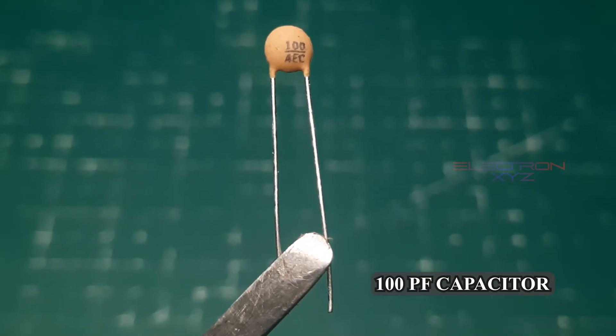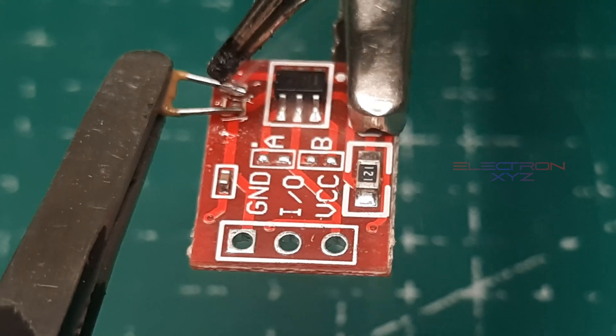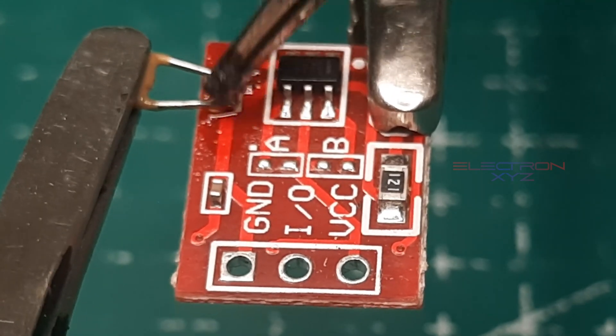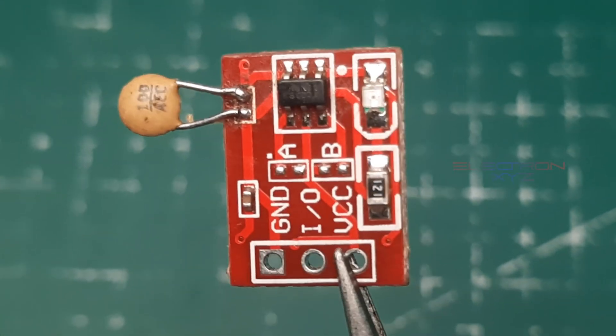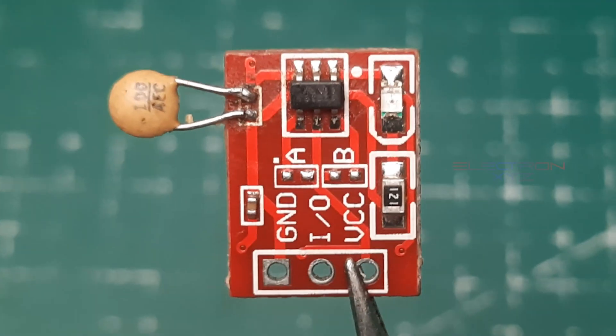Grab a 100 microfarad capacitor - it's like a tiny electrical filter. Connect one leg to the touch sensor's input pin and the other to ground. This can help filter out electrical noise, making the sensor less sensitive to false triggers.